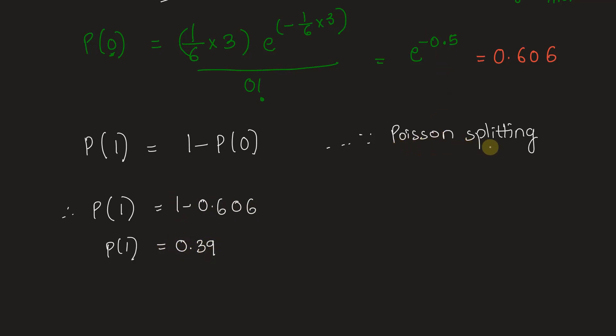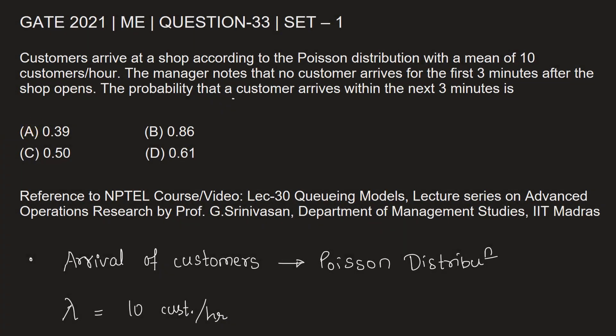Now we were able to use Poisson splitting because the first interval was three minutes, second interval was also three minutes. Even the rate for first interval was same as the rate for the second interval. So we have 0.39 as option A, our answer is option A.